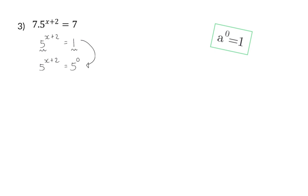Now I can say that x plus 2 is equal to 0, because the exponent on the left has to be equal to the exponent on the right. And when I solve x, x will be minus 2.